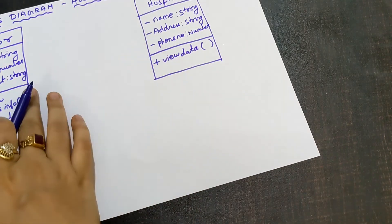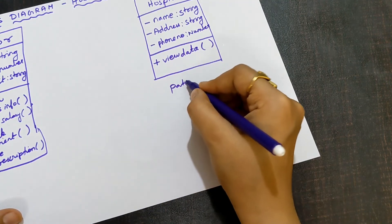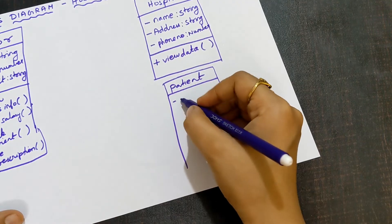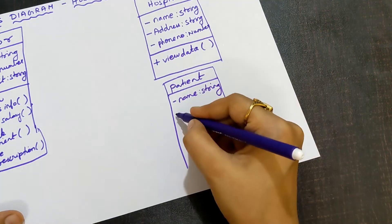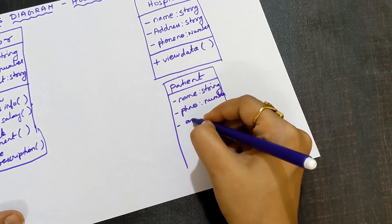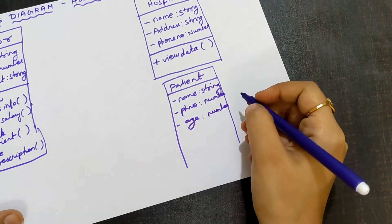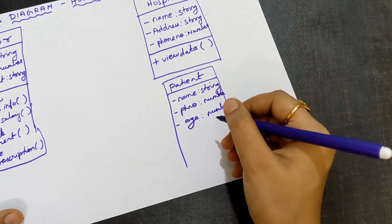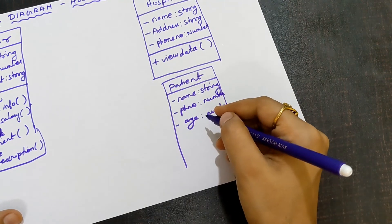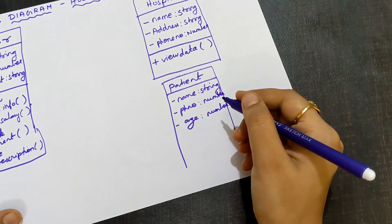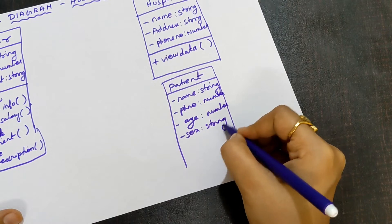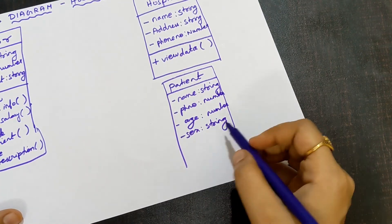The next class is patient, which is very important. Patient is the object name. The attributes of patient are: name, of data type string; phone number, of data type number; age, which is also a number — age is important because the dosage of tablets depends on it, and you cannot give random medicines without knowing the age; and sex of the patient, whether male or female, which is a string because it is written in words.